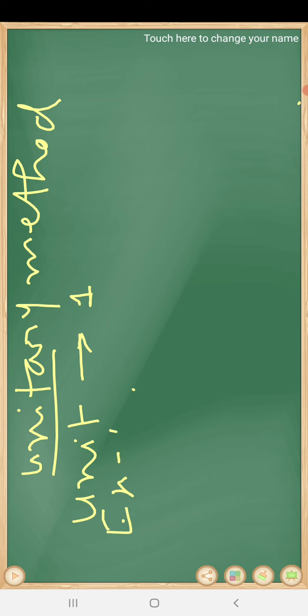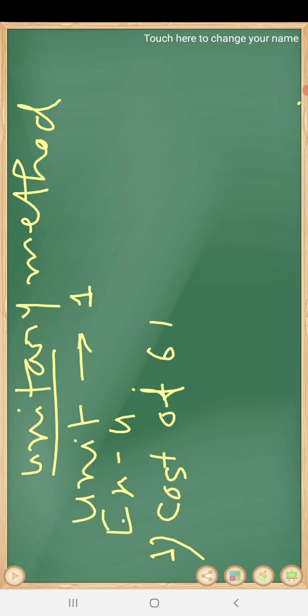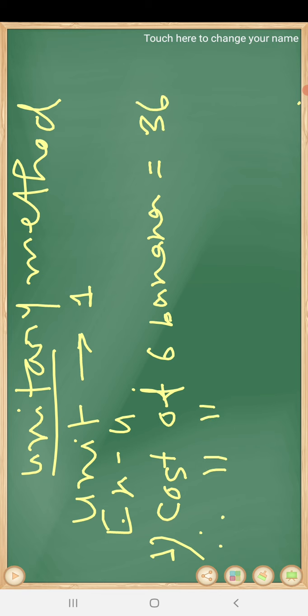Now see exercise question number one. In question number one it is written that the cost of six bananas is 36. What is the cost of one banana? The cost of one banana is automatically less than the cost of six bananas, so we divide.